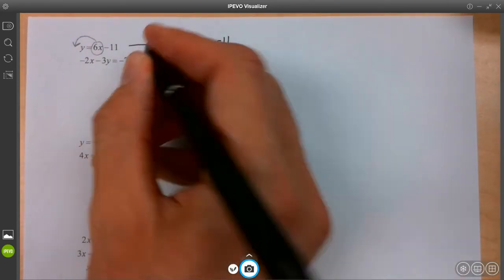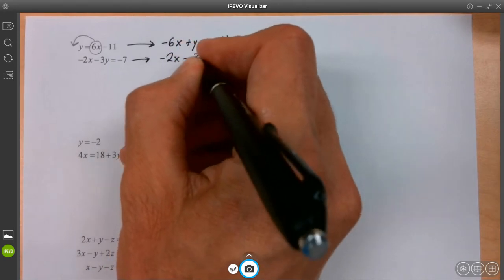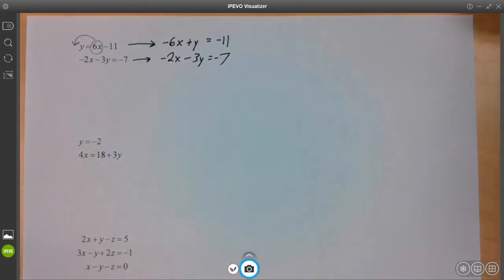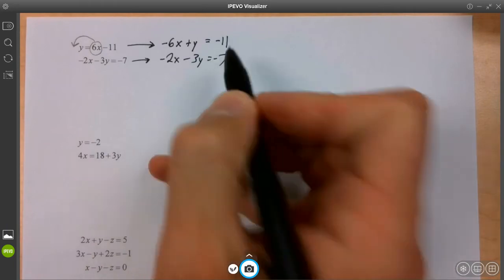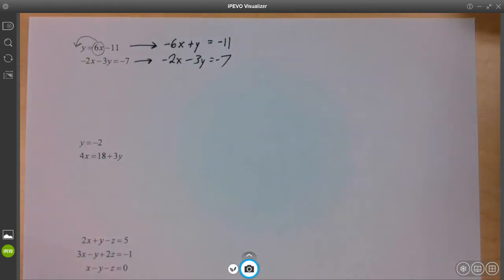And that's equal negative eleven. Okay, so if a term switches sides, it switches signs. It was the six X was here on the right, now it's on the left, it needs to be negative. This equation does not change. Negative two X minus three Y equals negative seven. We're good to go. This is actually set up and ready to go now.